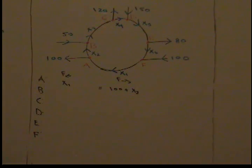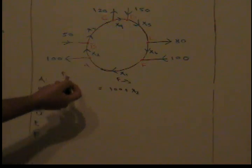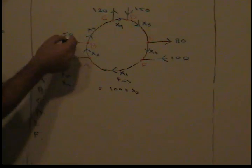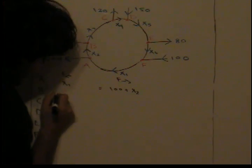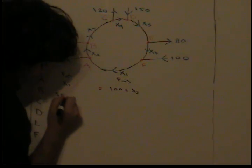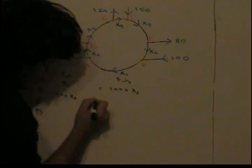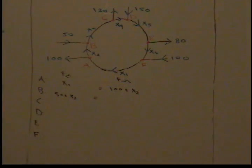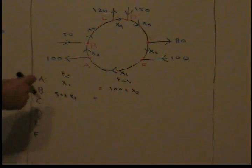Now let's go to node B. What goes into node B looks like 50 plus x2. So we're going to say 50 plus x2 equals what flows out of node B, and that looks like just x3.